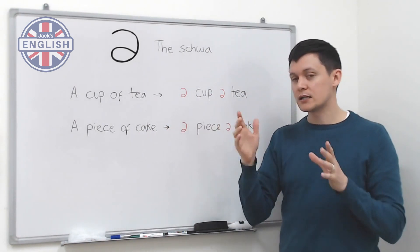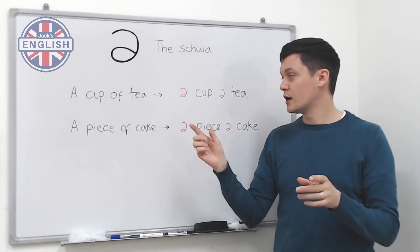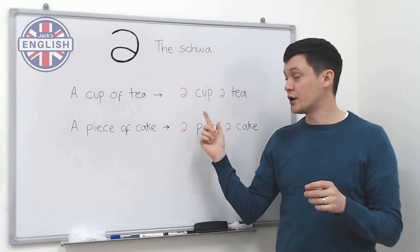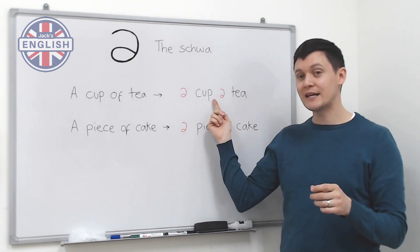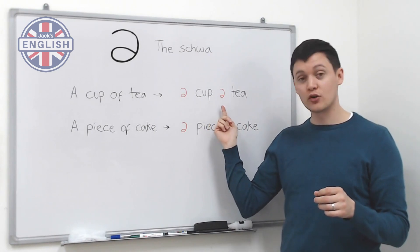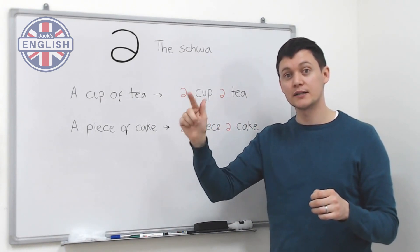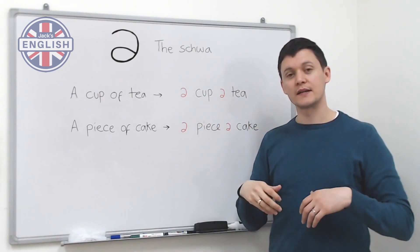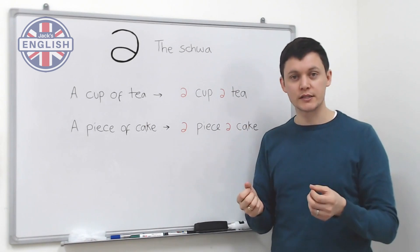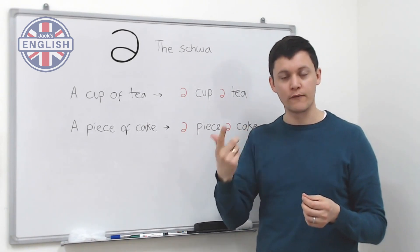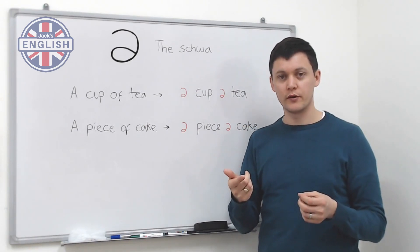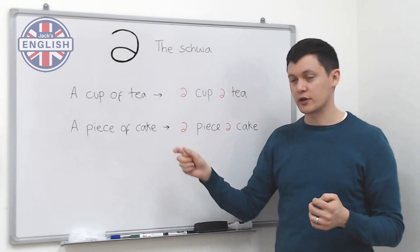Notice that the 'p' in 'cup' adds on to the schwa — 'a cup-of tea.' That's a very good tip for sounding more fluent.